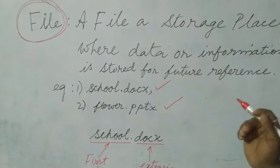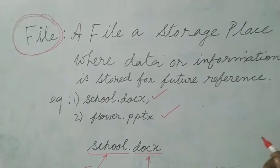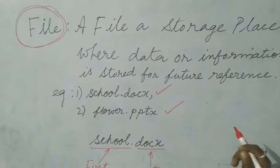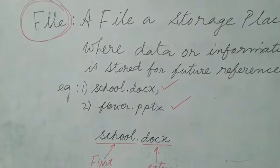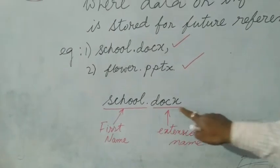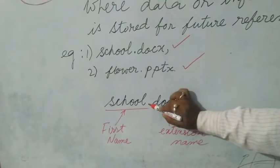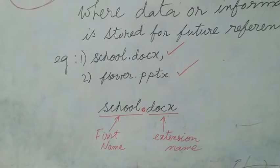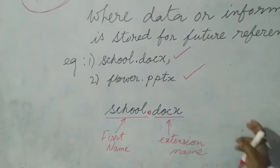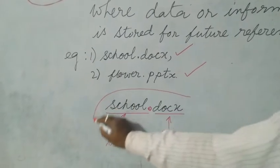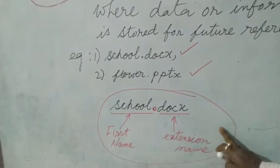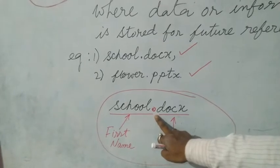Application software can be MS Word, MS PowerPoint, MS Excel, MS Paint, Logo, or any application — I have to take the help of it in order to create a file. Like school.docx — this dot is very important, which separates the first name from the extension name. So a file has two parts: the first name and the extension name, separated by a dot.